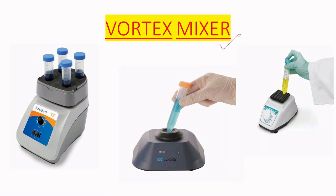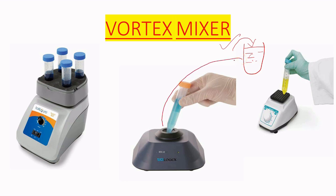A vortex mixer is used to mix components. Suppose we have prepared a media by adding distilled water with the readymade media — we then need to mix this media. To do so, we add the falcon tube or test tube into the vortex machine, which shakes the media to mix the whole total media.